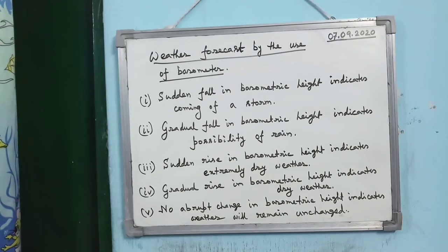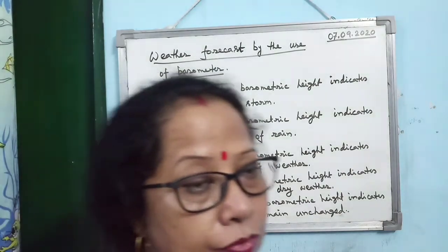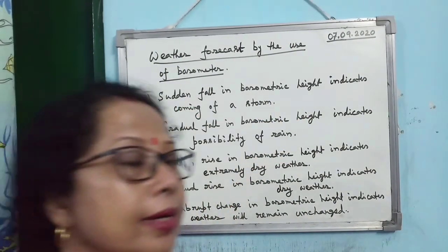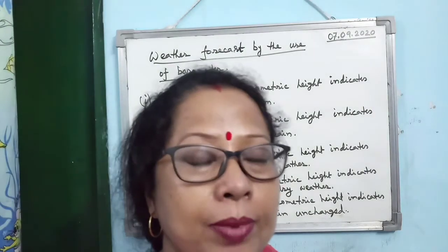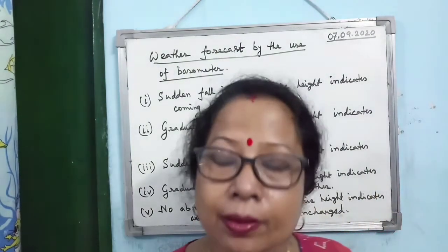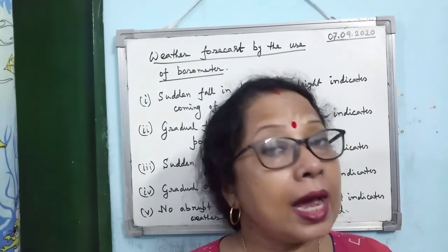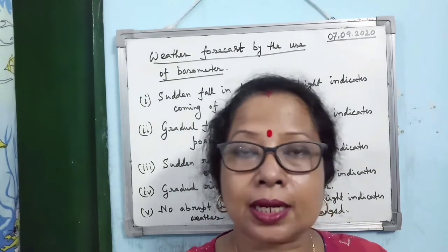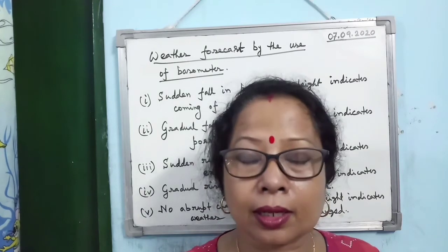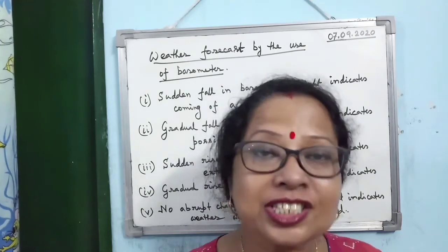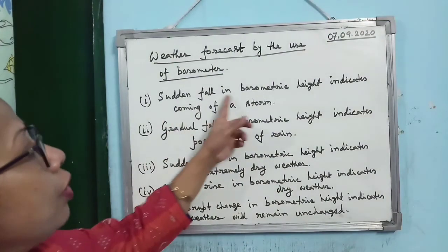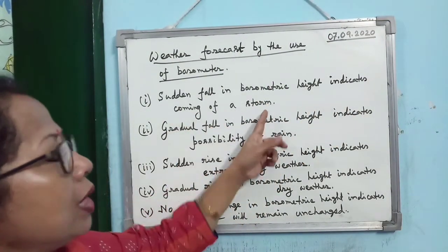Using barometric height, we can make weather forecasts. If the barometric height suddenly falls, it indicates a storm is coming — a low pressure region is created, and air rushes from surrounding high pressure areas to the low pressure region, forming a storm.